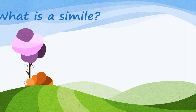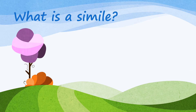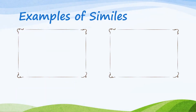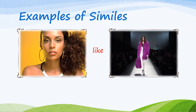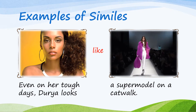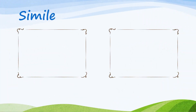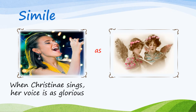First, let's take a look at similes. A simile compares two things using the words like or as. For example, Monique drove her car as fast as lightning. Here are other examples. We have two characters, Dariah on the left and a supermodel on the right. We can use the word like to make a comparison, such as: even on her tough days, Dariah looks like a supermodel on a catwalk. Let's do another example. This time, we are comparing Kristine singing to angels using the term as. When Kristine sings, her voice is as glorious as a heavenly host of angels.